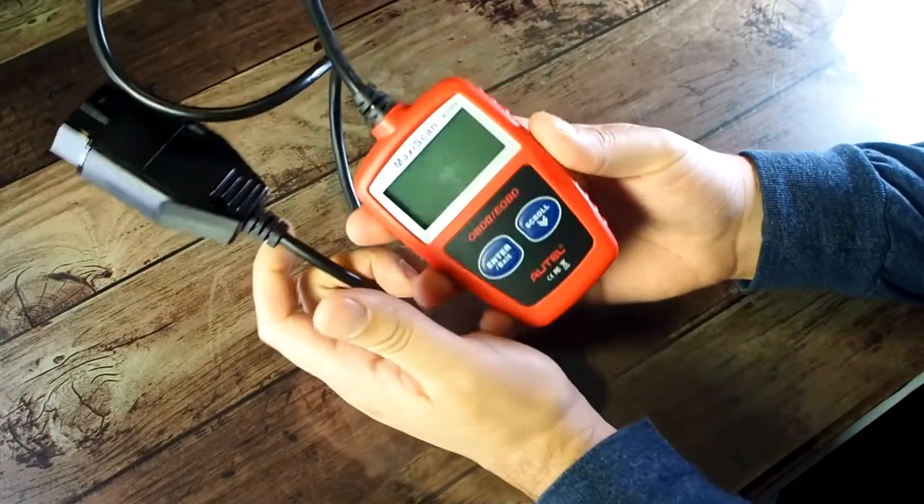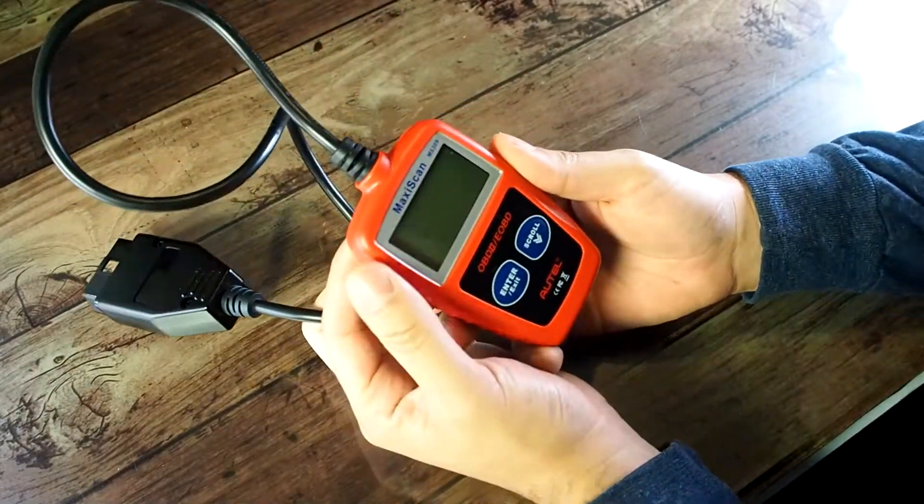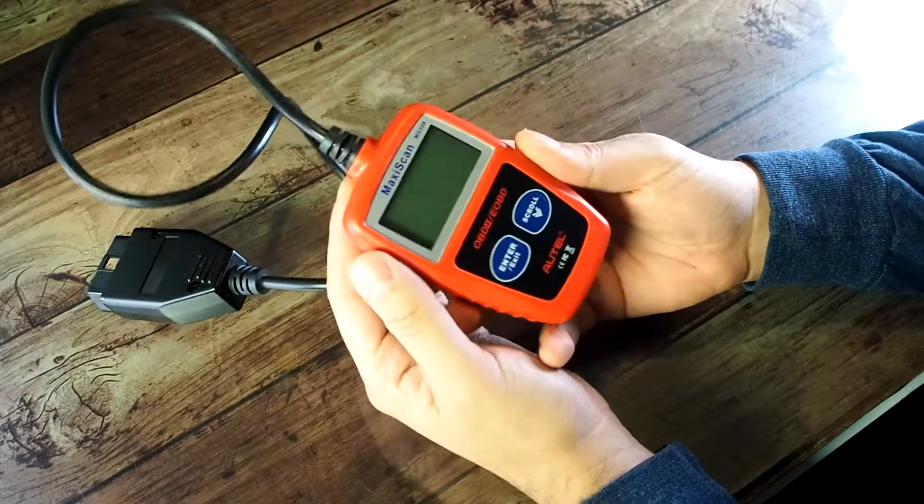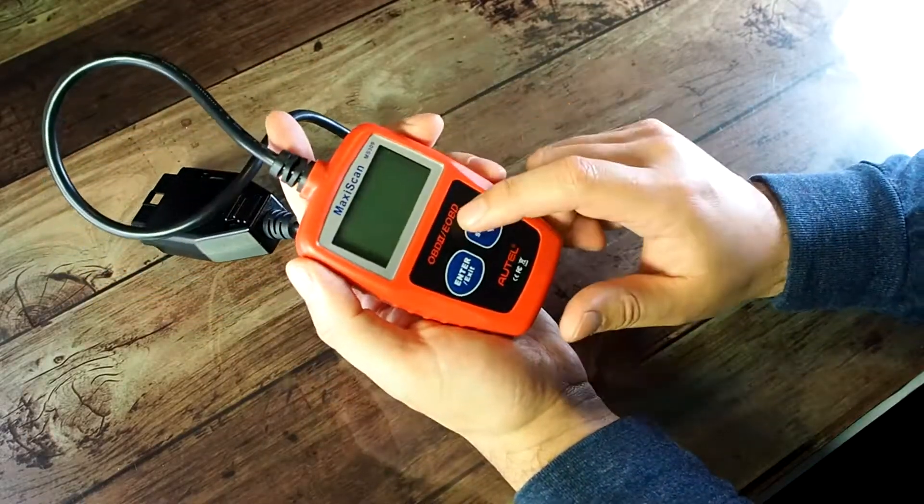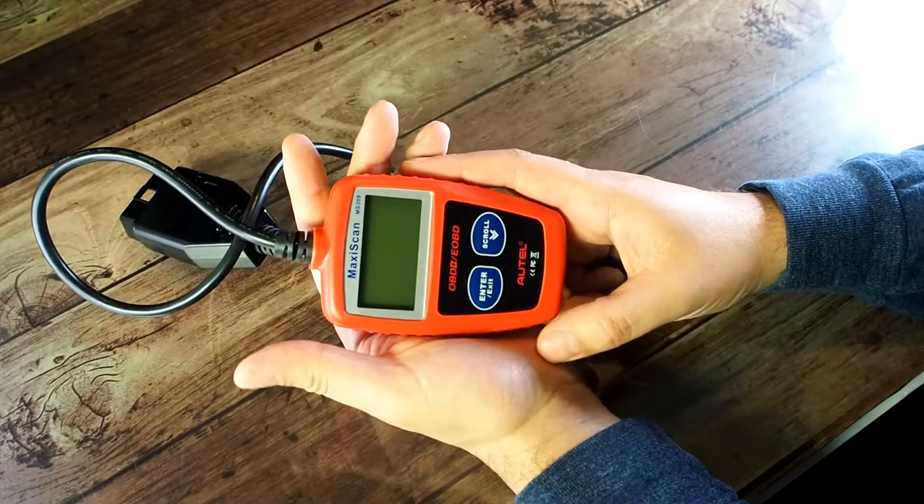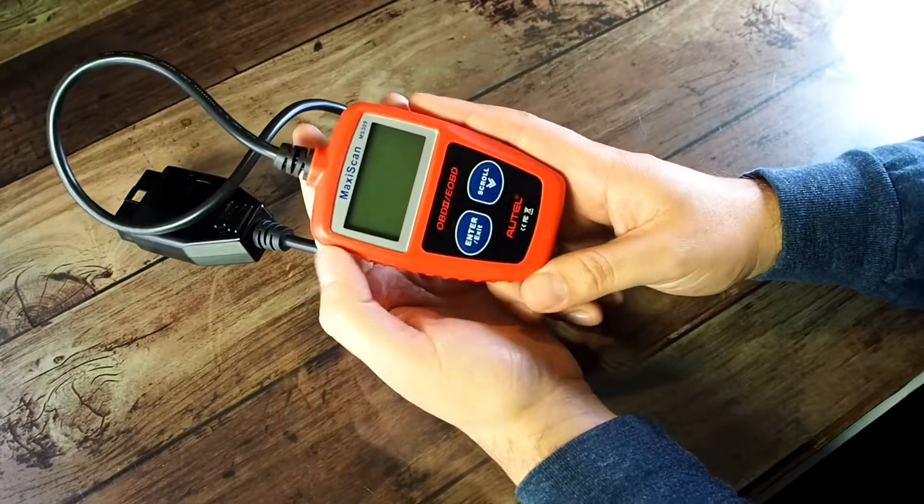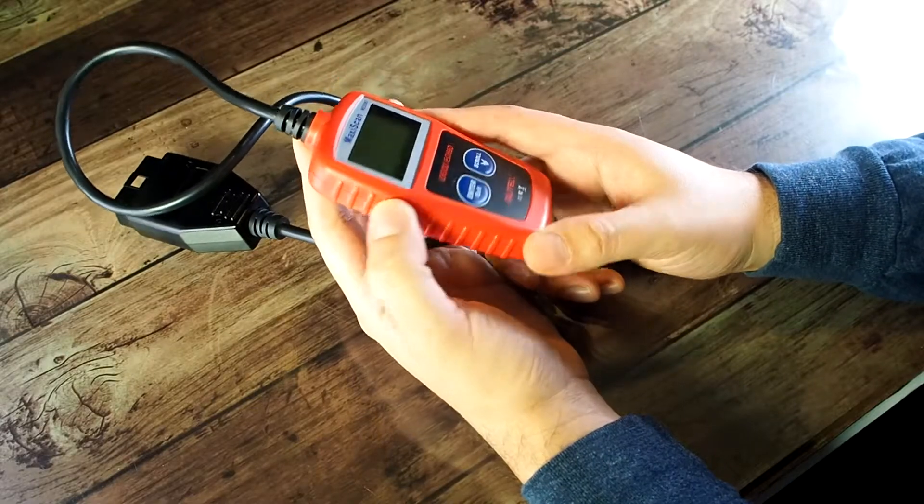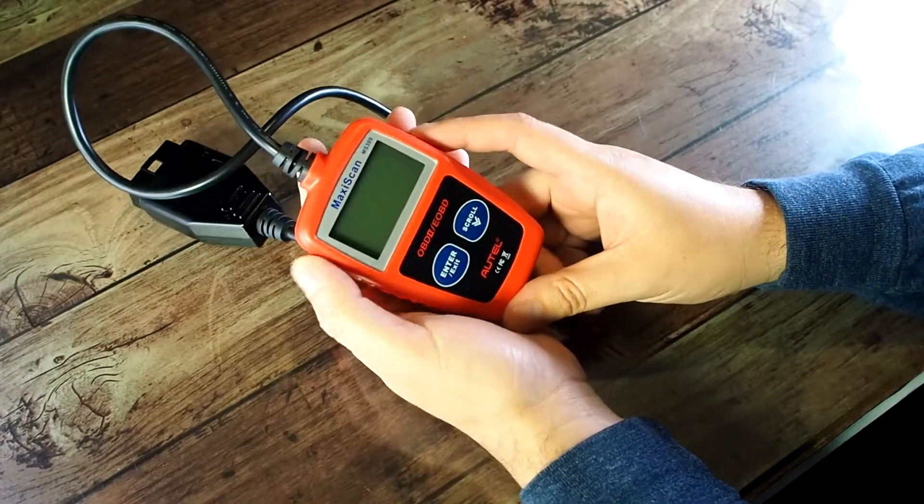Hey guys, so this is my review for the MaxiScan MS309. I got this on Amazon for 20-something bucks, 24-25 bucks, and I wanted to pass smog.